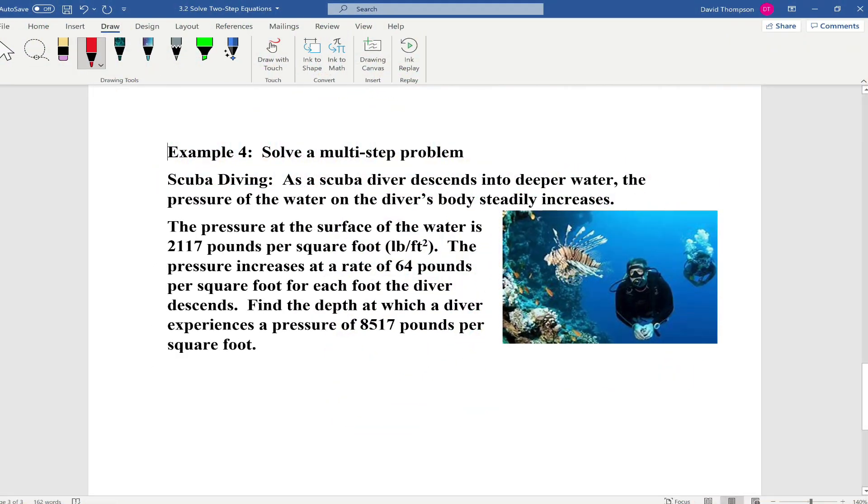This one is about scuba diving. As the scuba diver descends into deeper waters, the pressure of the water on the diver's body steadily increases. The pressure at the surface of the water is 2,117 pounds per square foot. Pressure increases at a rate of 64 pounds per square foot for each foot the diver descends. Find the depth at which the diver experienced a pressure of 8,517 pounds per square foot.